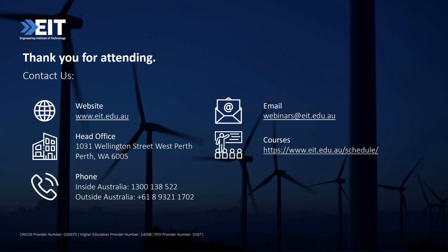You can see from your screen that we have our website there, our head office address, and our phone numbers — whether you are in Australia or outside the country. We also have our email. If you have any concerns, if there are links that are not working, or anything related to webinars, you can send it to webinars@eit.edu.au. If you'd like to see our courses, you can go to www.eit.edu.au/schedule for all our scheduled courses throughout the year. Dr. Assie, do you have anything to say before we end this session?